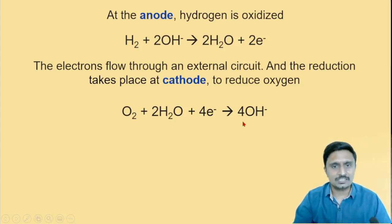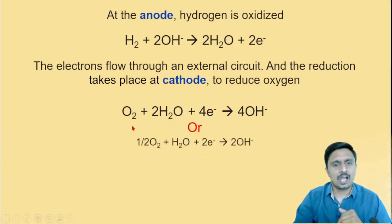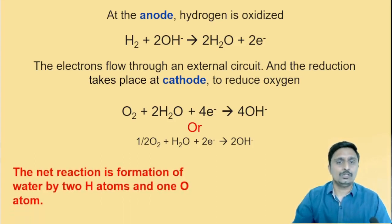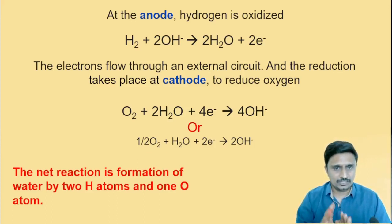You can see the other reaction, that is like this: Half O2 plus H2O plus twice electrons gives twice OH minus ions. This is the reaction taking place at cathode and at anode to give the water molecule. The net reaction is the combination of two hydrogen atoms and one oxygen atom to form the water molecule. In this way the fuel cell works.